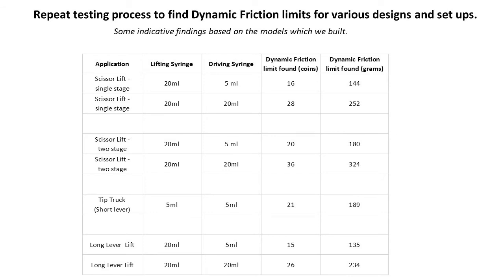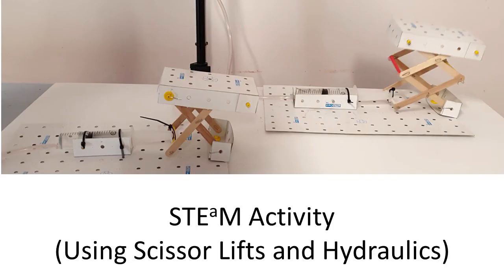We won't repeat all the videos of all the different tests which we've conducted, but here is a summary of the main results. Please be careful with these results and only use them as an indication of what your students should expect to achieve. There is a lot more information in two separate detailed videos. The two-stage scissor lift models built by different students have been found to exhibit as much as a 50% variation in the apparent friction limits, which is one reason we suggest using it with advanced students.